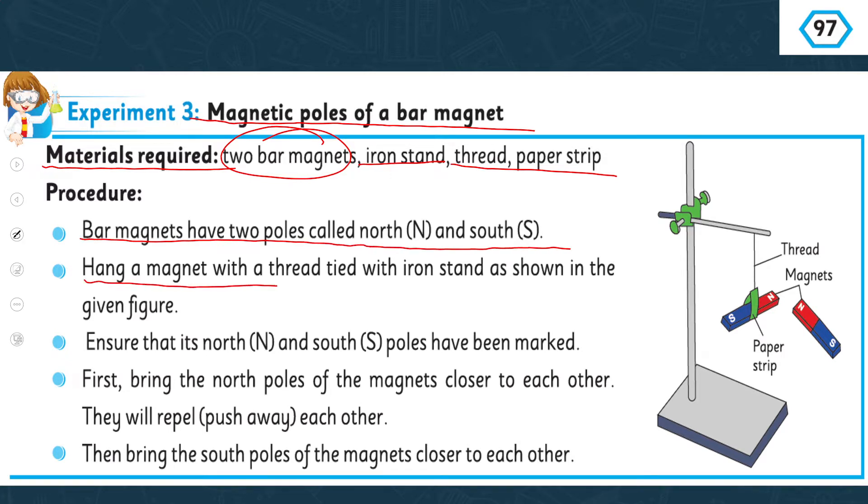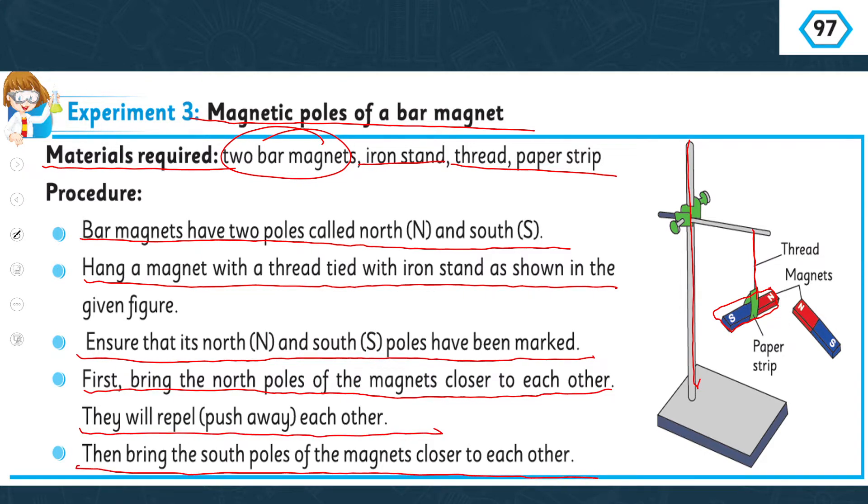The procedure: bar magnets have two poles called north and south pole. Hang a magnet with a thread tied with an iron stand as shown in the figure. You need to hang one bar magnet from the stand using thread. Ensure that its north and south poles have been marked. Almost all bar magnets have their poles marked. First bring the north poles of the magnets closer to each other.